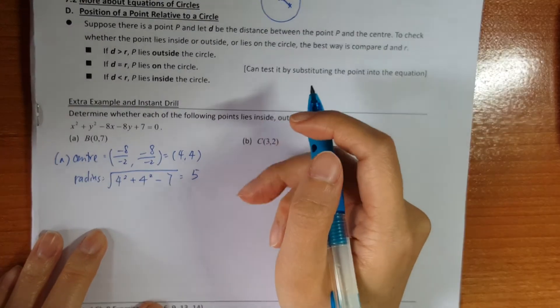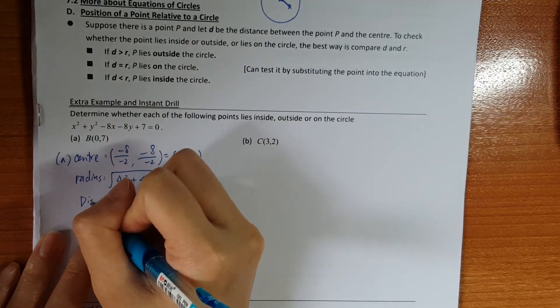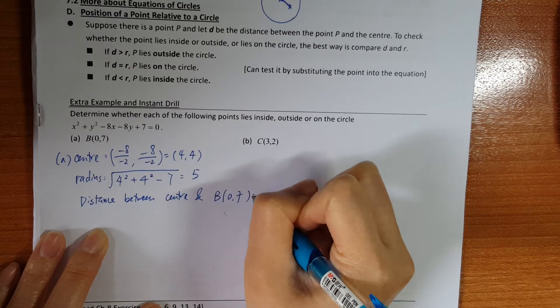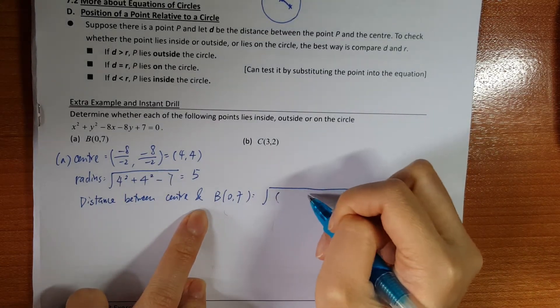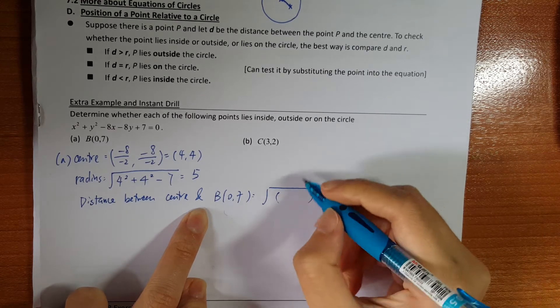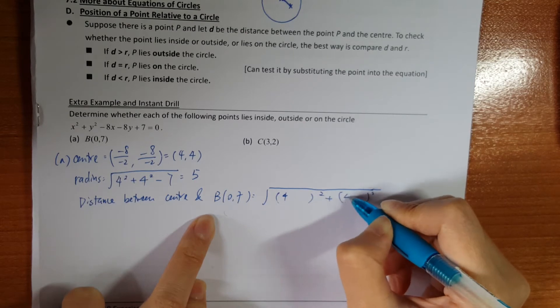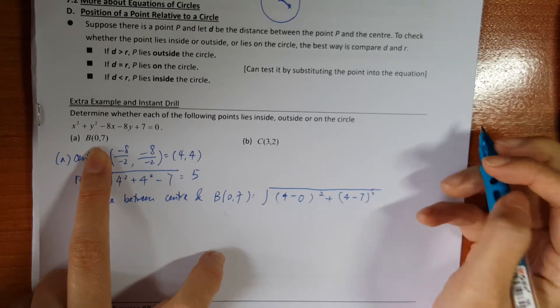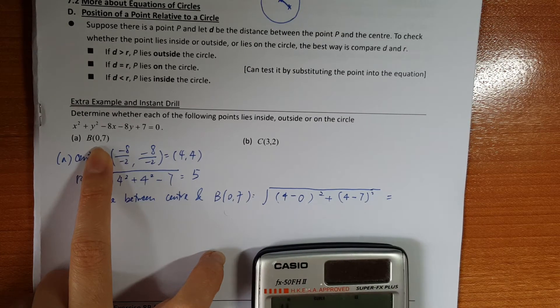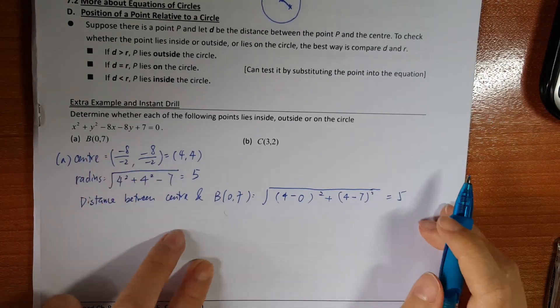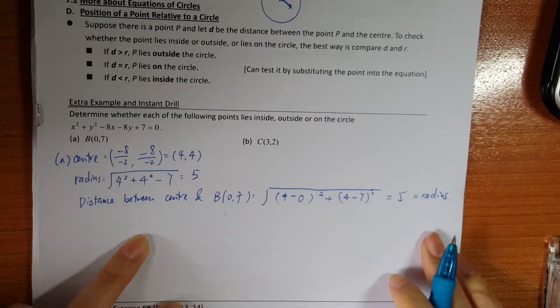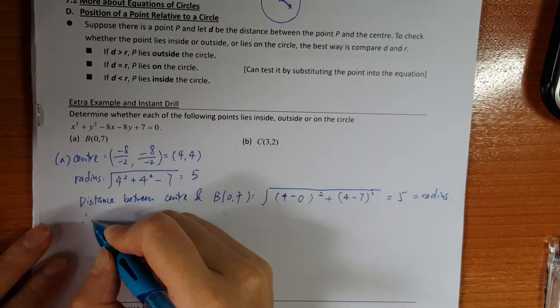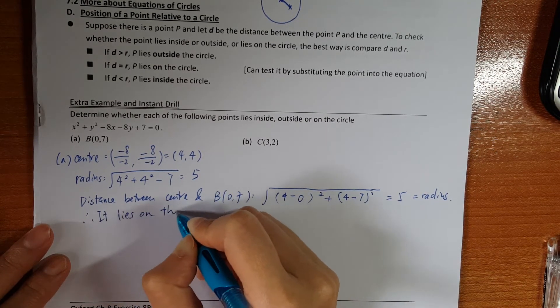So you have to identify the distance between the center and the point B. So 4, 4 I write here, and then here. This point is (0, 7). So 0 I put here, 7 I put here. So let me see. So it would be 5. Okay, which is same as the radius. So if it is same distance as the radius, it means that it lies on the circle.